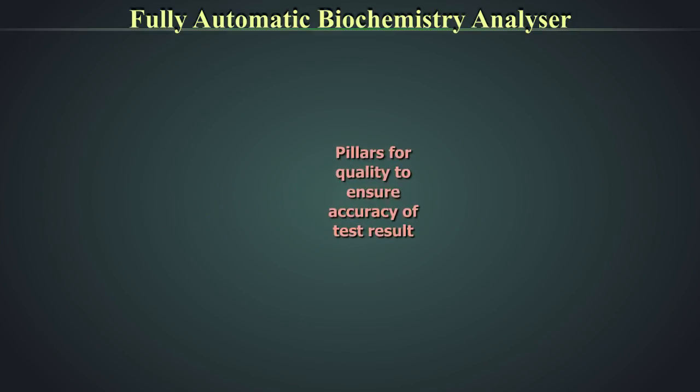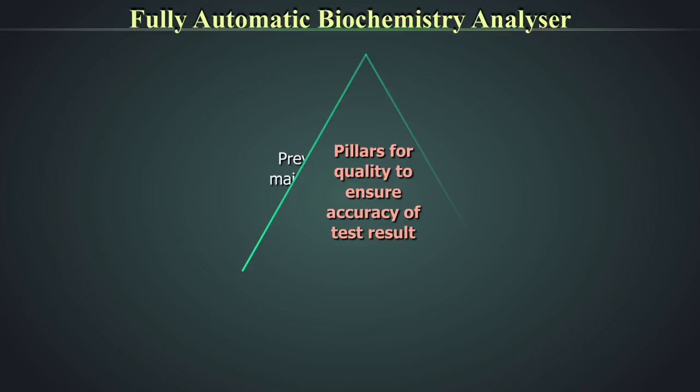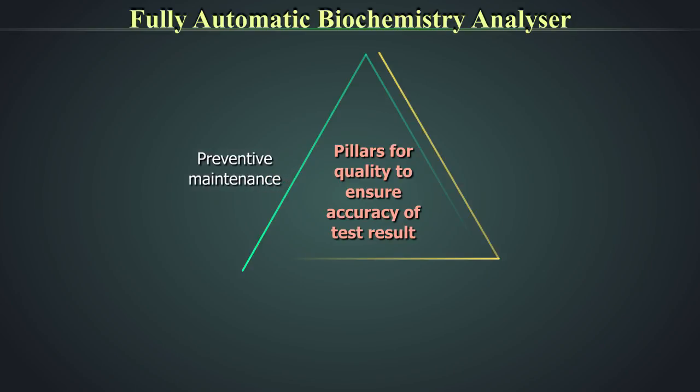Three pillars for quality to ensure accuracy of results include preventive maintenance, calibration, and control.